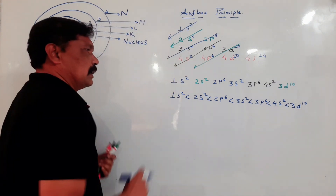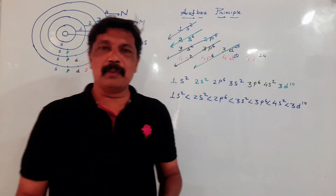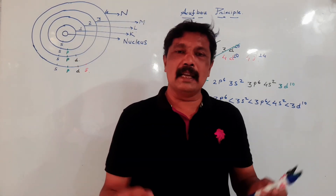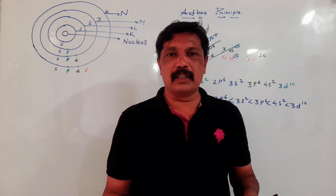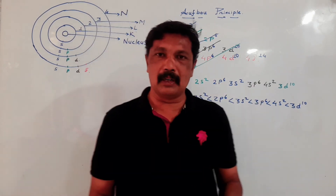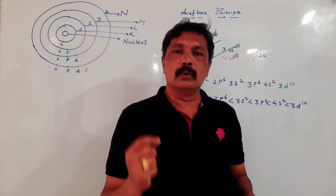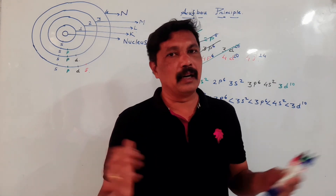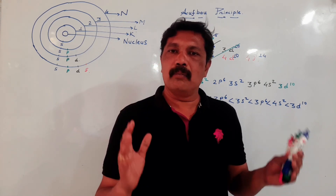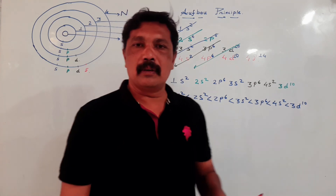So, this is the basic information. Now we are going to write the electronic configuration according to the Aufbau principle from atomic number 1 to 30 and have a thorough understanding of the Aufbau principle.